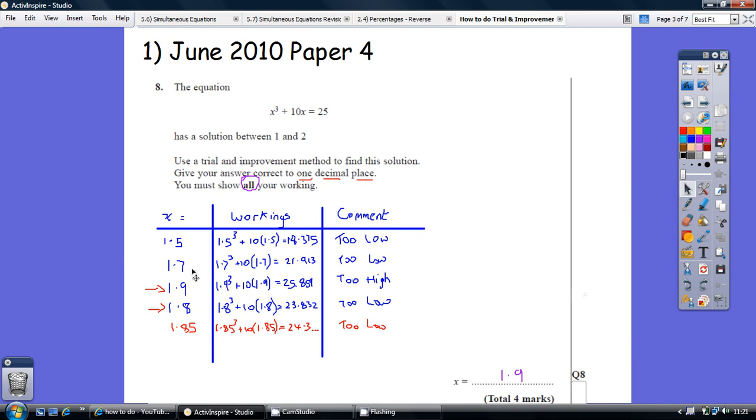Go up again. Either 1.8 or 1.9. I've tried 1.9. 1.9 cubed with 10 lots of 1.9 gives me 25.959. That's just a fraction too high, higher than 25, so the comment should be too high. Now, just because that's really close to 25 doesn't mean you can put 1.9 down as your answer. It probably is, but that will only give you two marks. You've really got to spell it out.